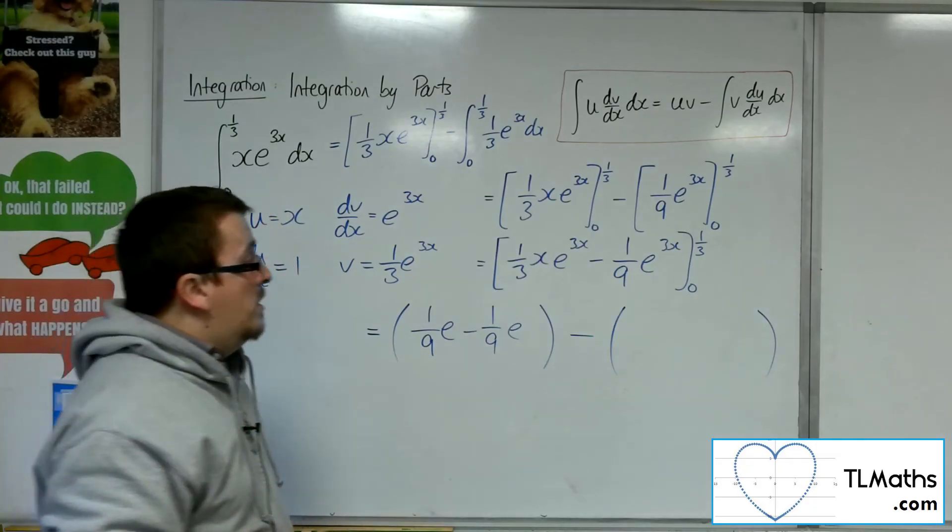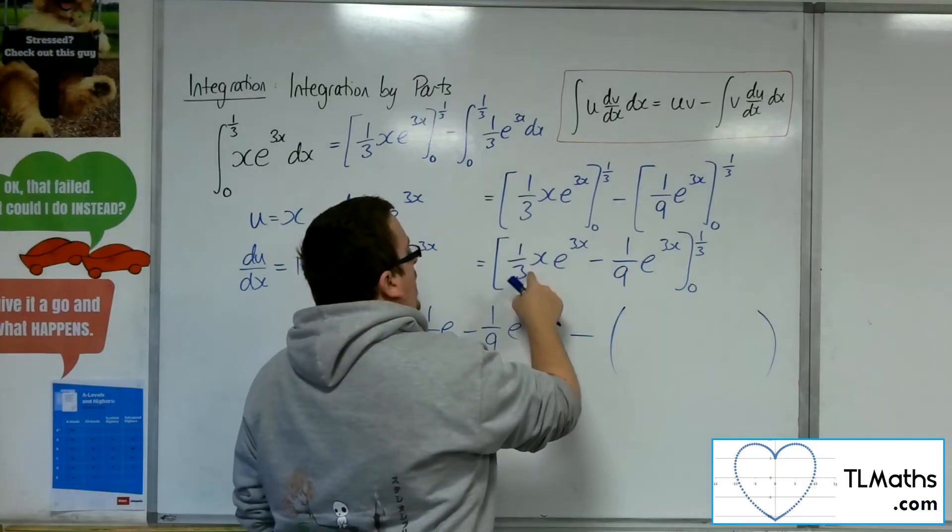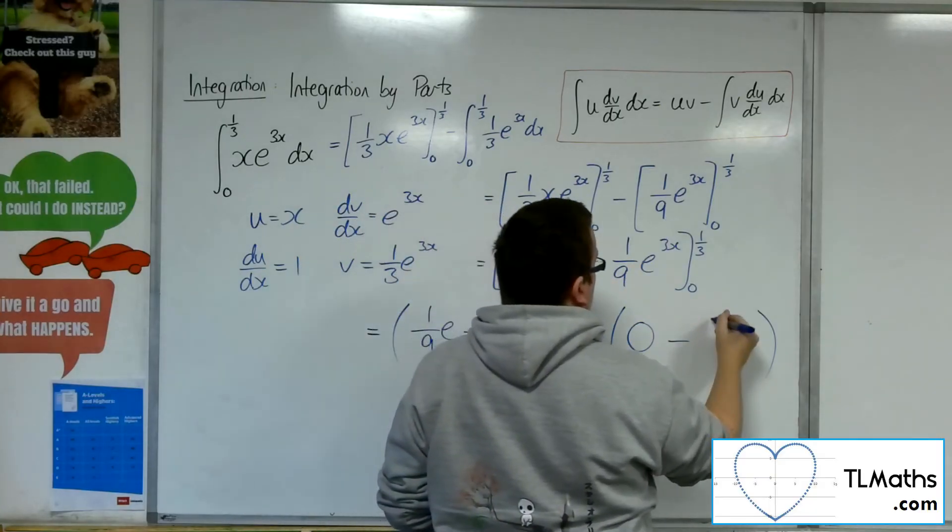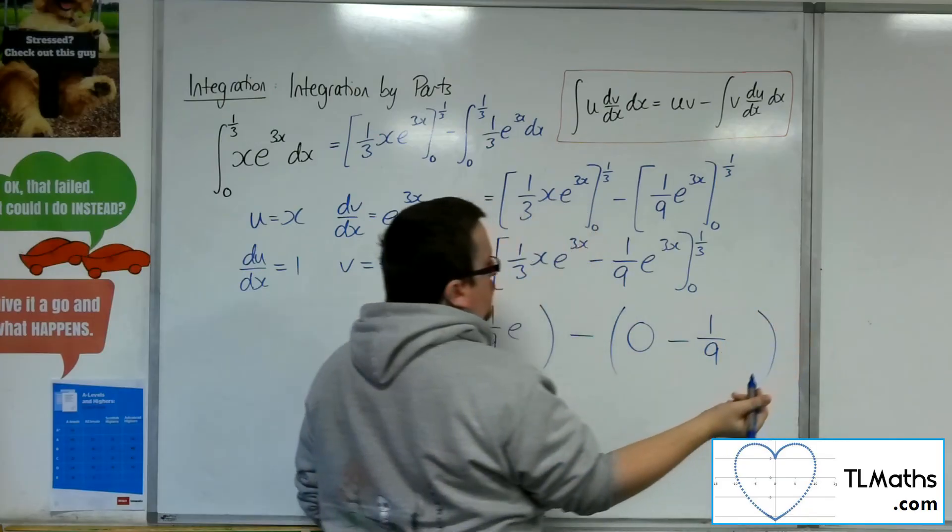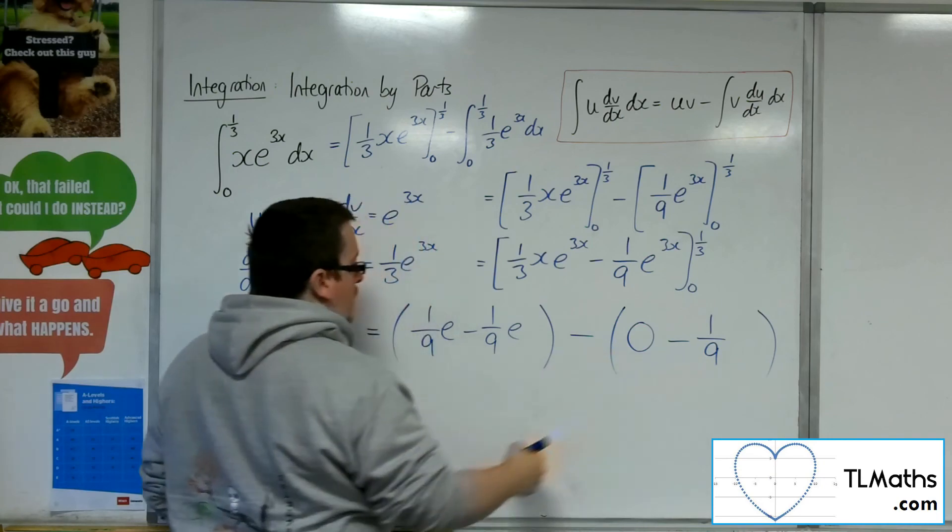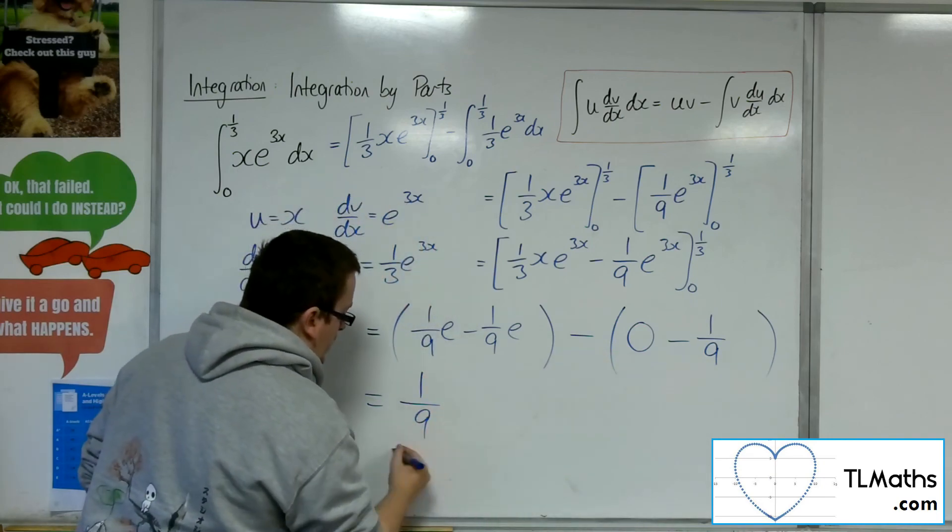Substituting in 0, I'm going to get 0, take away 1/9 e to the 0, which is 1. So that bracket cancels itself out, take away minus 1/9, so it's just 1/9.